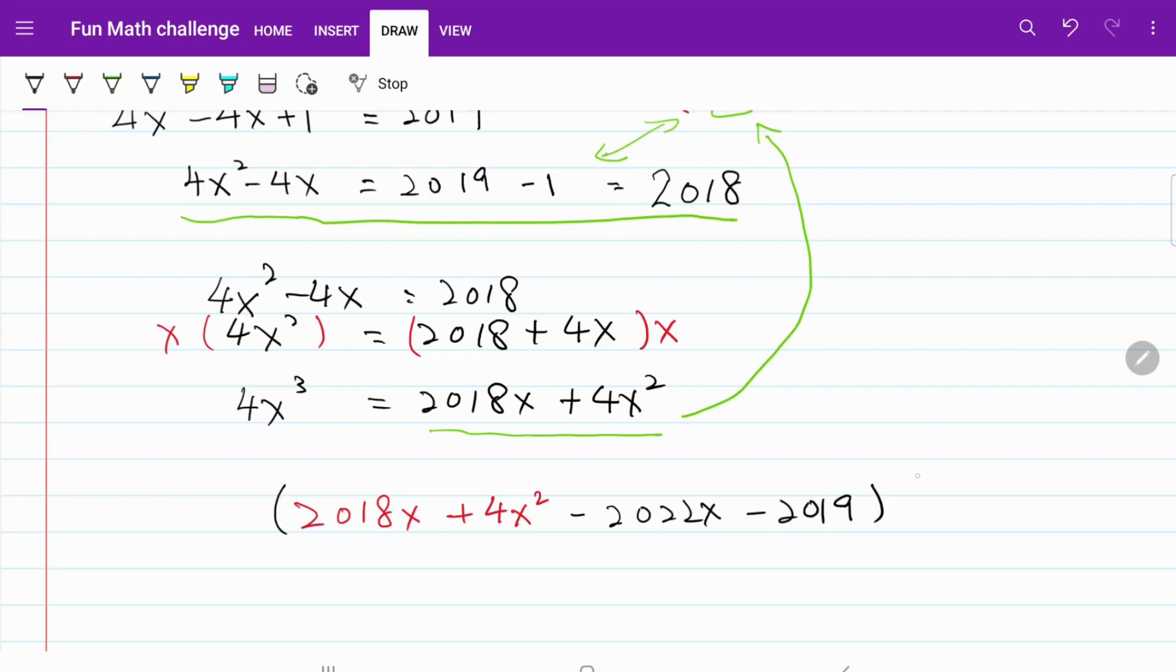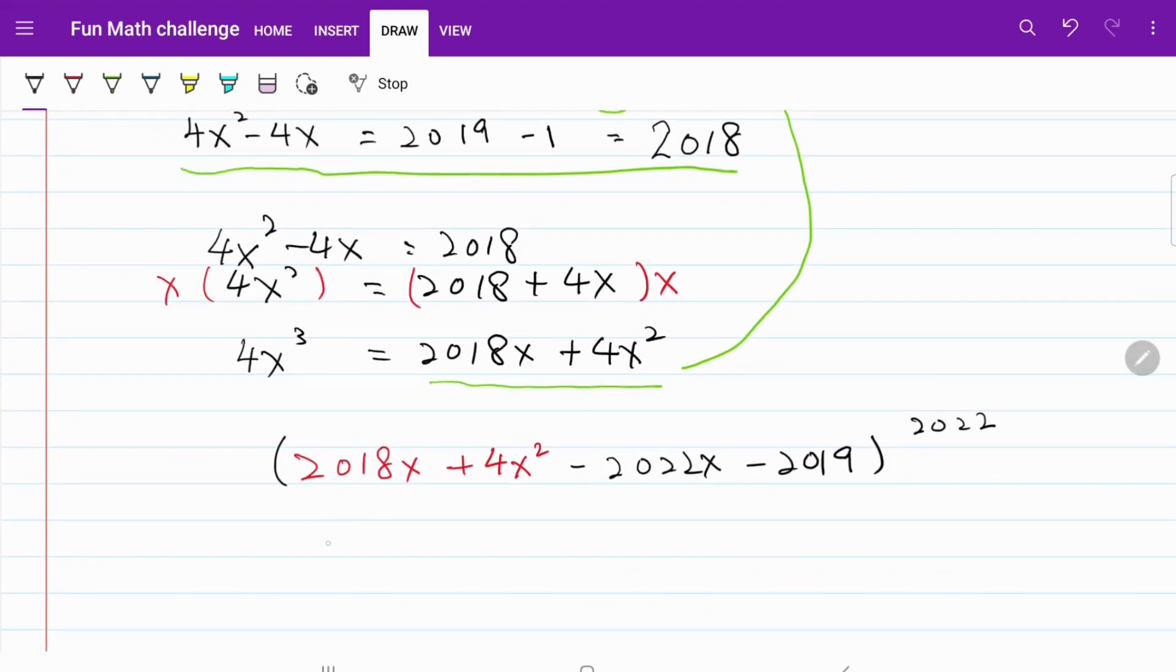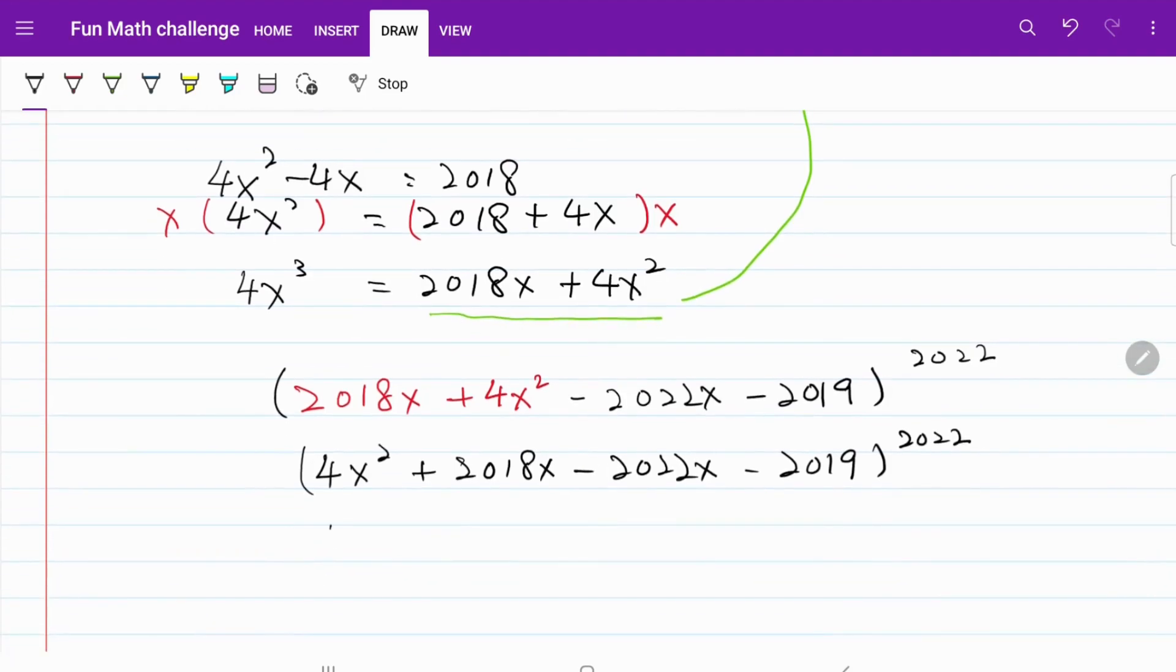Let's work on rearranging what's inside the bracket. Now I have 4x square plus 2018x minus 2,022x minus 2,019 raised to the power of 2,022. This becomes 4x square minus 4x minus 2,019 raised to the power of 2,022.